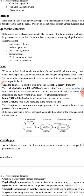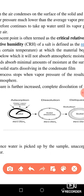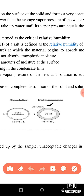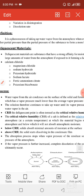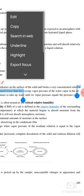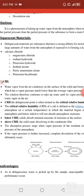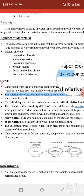In the process of deliquescence, water vapors from the atmosphere condense on the surface of a solid substance. Then liquefaction occurs and a whole solution forms surrounding the particle. Water vapors from the air condense on the surface of the solid and form a very concentrated solution which has a vapor pressure lower than the average vapor pressure of the surroundings. The solution then continues to take up water until its vapor pressure equals the vapor pressure in the air.